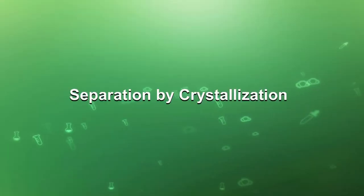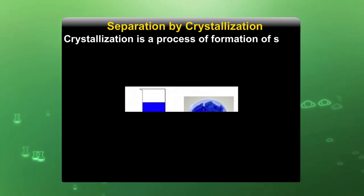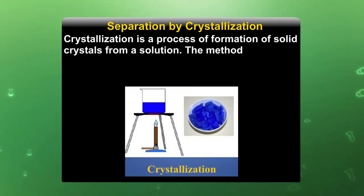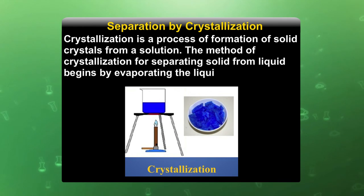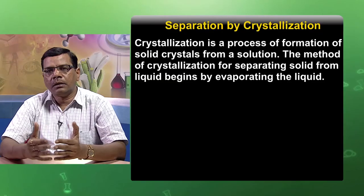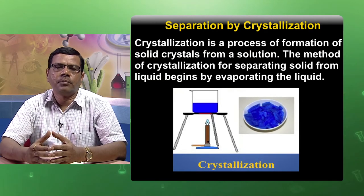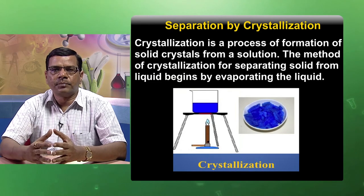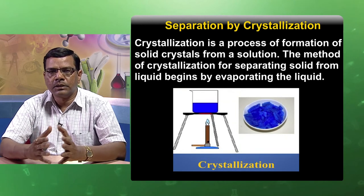Separation by crystallization: crystallization is the process of formation of solid crystals from a solution. The method begins by evaporating the liquid — the solvent molecules are volatile but the solute is not. On heating, solvent molecules evaporate and the solid solute appears as crystals. For example, copper sulfate crystals can be separated from their solution using the crystallization process.